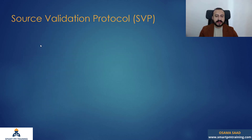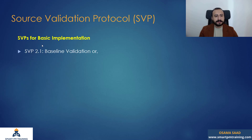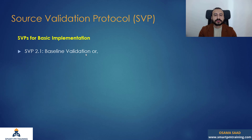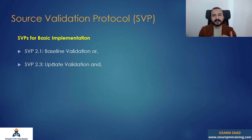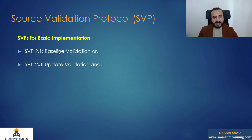What are the SVPs? For basic implementation we need baseline validation because we are modeling the impact against the baseline — we use the baseline as a reference and add new activities into it to evaluate the impact. Or update validation: according to the RP you can use the baseline or maybe an update of your choice to model the impact, but it is still a single base. We need only one schedule to evaluate the delays, and it's common to use the baseline for this delay analysis method.